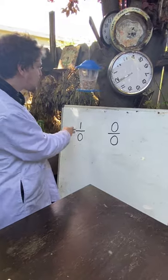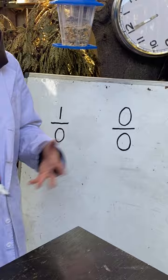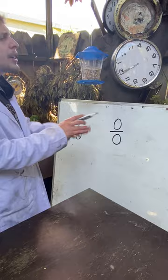Are 1 divided by 0 and 0 divided by 0 different? Well, in typical arithmetic, neither is allowed, but they don't work for sort of different reasons.